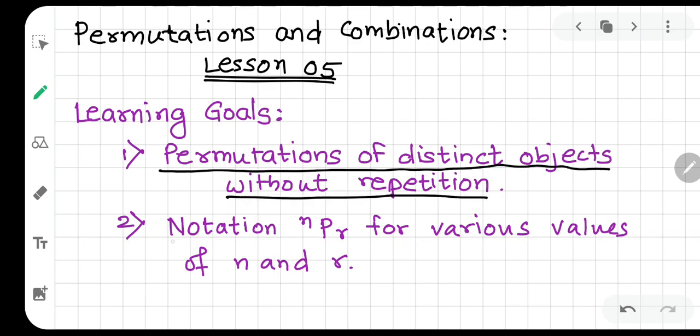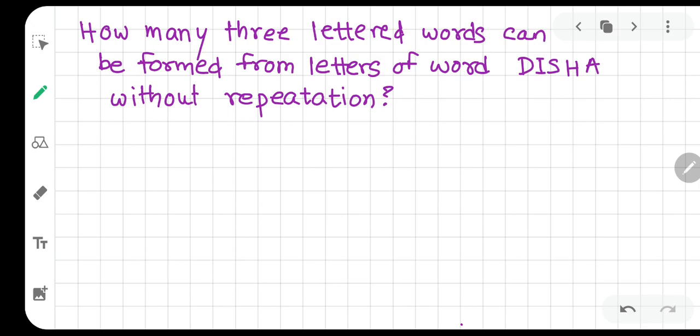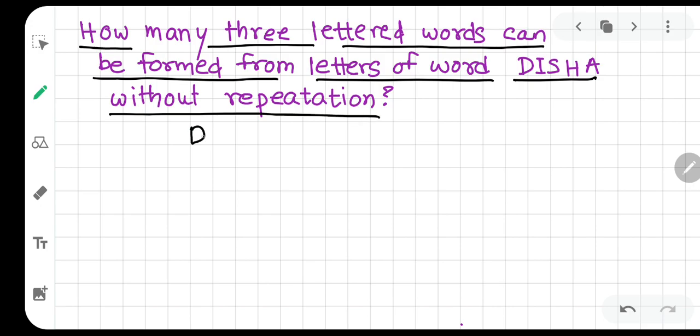We want to learn to find values using the notation nPr for various values of n and r. Let's solve a question first: how many three-lettered words can be formed from the letters of the word DISHA without repetition? We have five letters, and no letter is repeated.